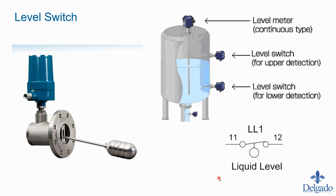A level switch is typically a float switch — the float rises with the liquid in the tank, and as the arm moves up a contact inside the mechanism changes state, sending a discrete signal. You can use float switches at the bottom or top of a tank to detect if the level is too high or too low. The symbol for a float switch is a circle on a small arm off the switch.